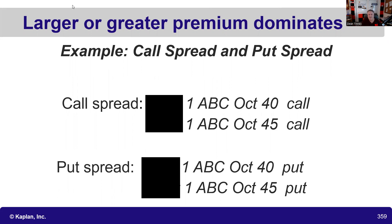So what we've basically said is that lower strike call contracts always have greater premiums. That means whenever you're looking at a call spread, the lower strike is going to be the dominant leg. Lower strike call contracts always have greater premiums.